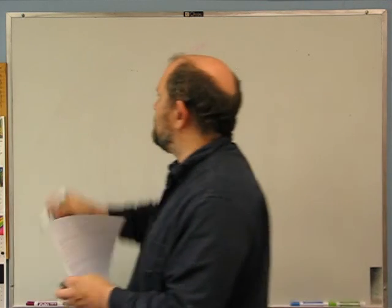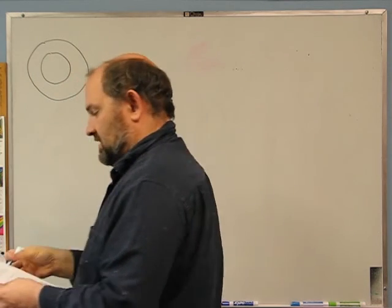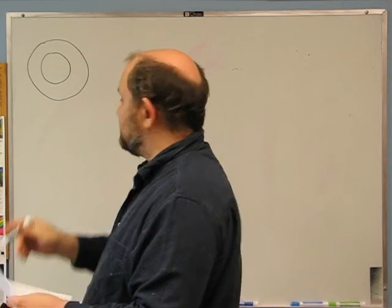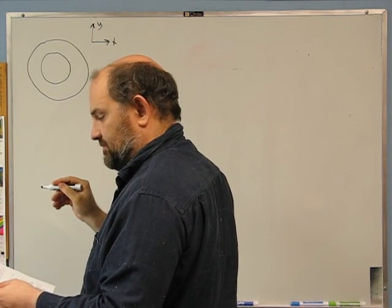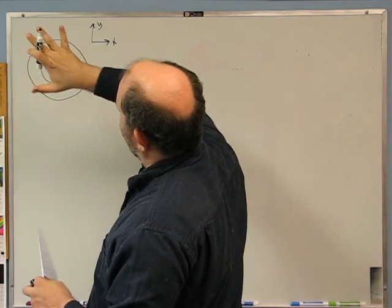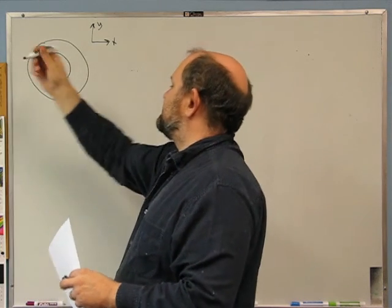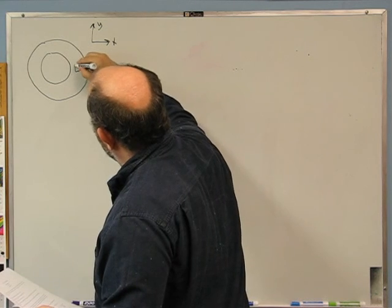Let's do the last few dynamics problems just before the exam next Tuesday. The first question: a car is driving around a circular track, moving clockwise as viewed from above. I'll draw that. The car is on the plus x side of the track. X and y are in the plane of the ground, so you're looking down on the track, and z is up. The car is on the plus x side going clockwise, so it's right here.